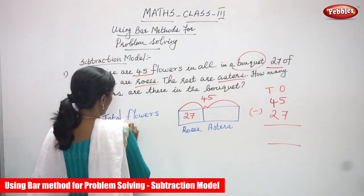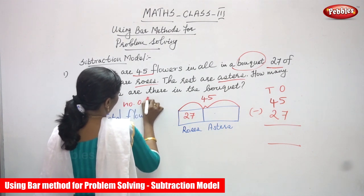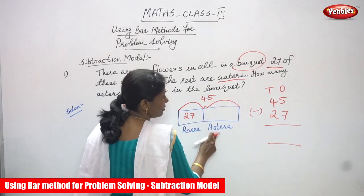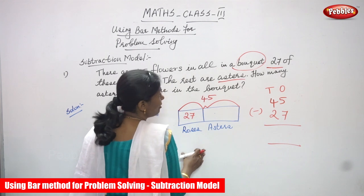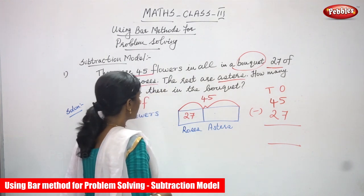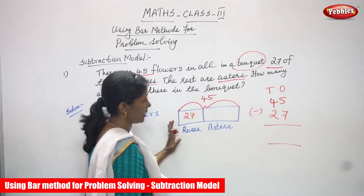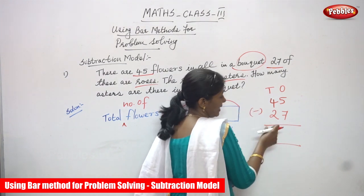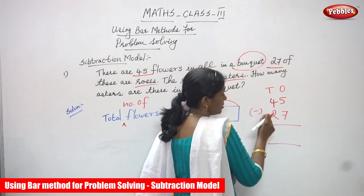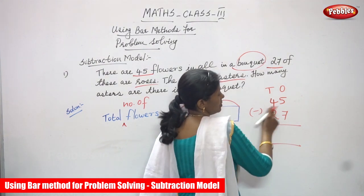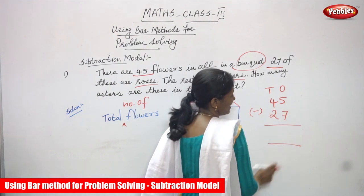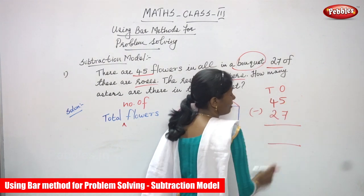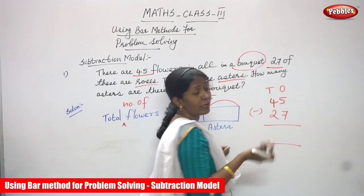Total number of flowers is 45, number of roses is 27, and asters we have to find out. This is a bar model — we will find out very clearly using a bar. So 45 is total number of flowers, number of roses is 27. This is a two-digit number, so 45 and 27. First you write the place value — ones and tens — then write the numbers.